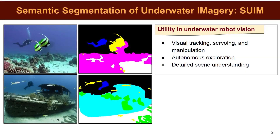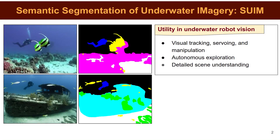Semantic segmentation is a well-studied problem in robotics and computer vision for its usefulness in many tasks including object detection and detailed scene understanding. For underwater robot vision in particular, the pixel-level detection of objects is useful for accurate scene parsing in applications such as visual tracking, surveying, and manipulation. It is also beneficial for autonomous underwater exploration by visually-guided robots.